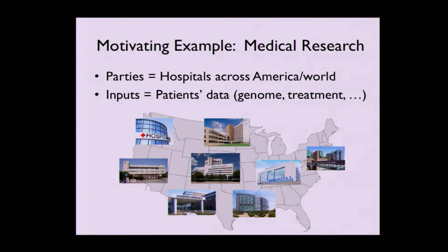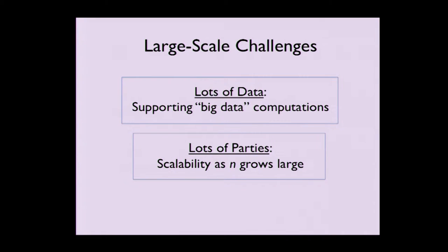To hit home the point, in this setting we have lots and lots of hospitals — there are about 5,500 hospitals just in the US. Also, the inputs themselves will be lots of information, say, entire genomic sequencing. So what are the challenges in the large scale? With lots of data, the types of programs we want to evaluate become quite different — big data computations, things that are lightweight, maybe just looking at small portions of the data. With lots of parties, we need protocols that scale reasonably as the number of parties, denoted N, grows.